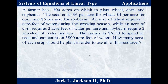A farmer has 1,300 acres on which to plant wheat, corn, and soybeans. Seed costs $6 per acre for wheat, $4 for corn, and $5 for soybeans. Wheat requires 5 acre-feet of water per acre, while corn and soybeans each require 2 acre-feet per acre. The farmer has $6,150 for seed and 3,800 acre-feet of water. How many acres of each crop should he plant to exactly use all his resources? Try working this one out yourself before continuing.